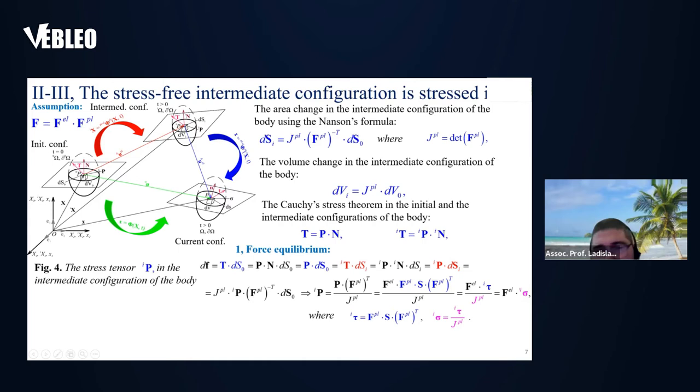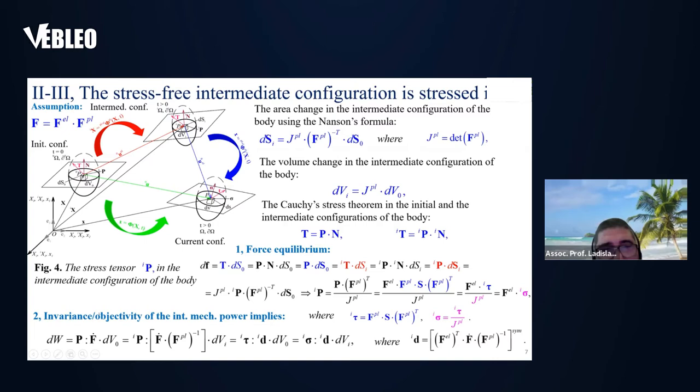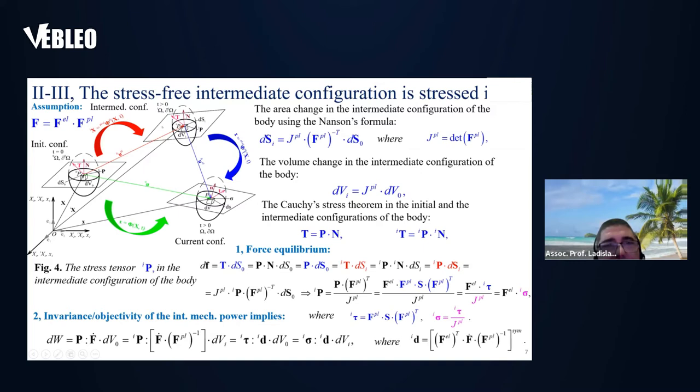Looking at the invariance and objectivity requirements, by substituting and manipulating equations, we arrive at the corresponding conjugate strain rate tensor associated with a given stress tensor. The intermediate and initial configurations are actually not stress-free in continuum theory, and the objectivity requirement is closely related to the balance of forces and the conservation of energy. This makes the formulation much more difficult.